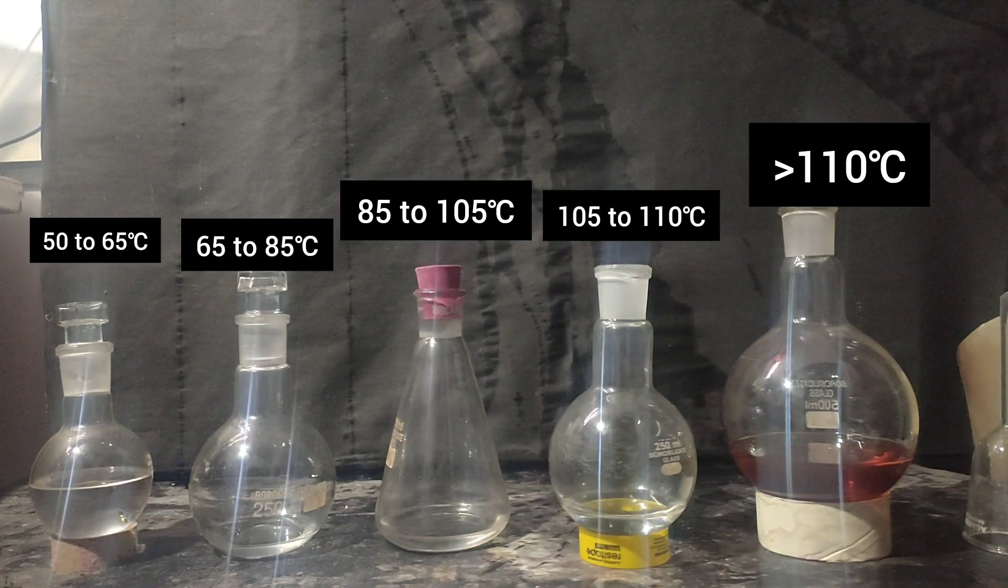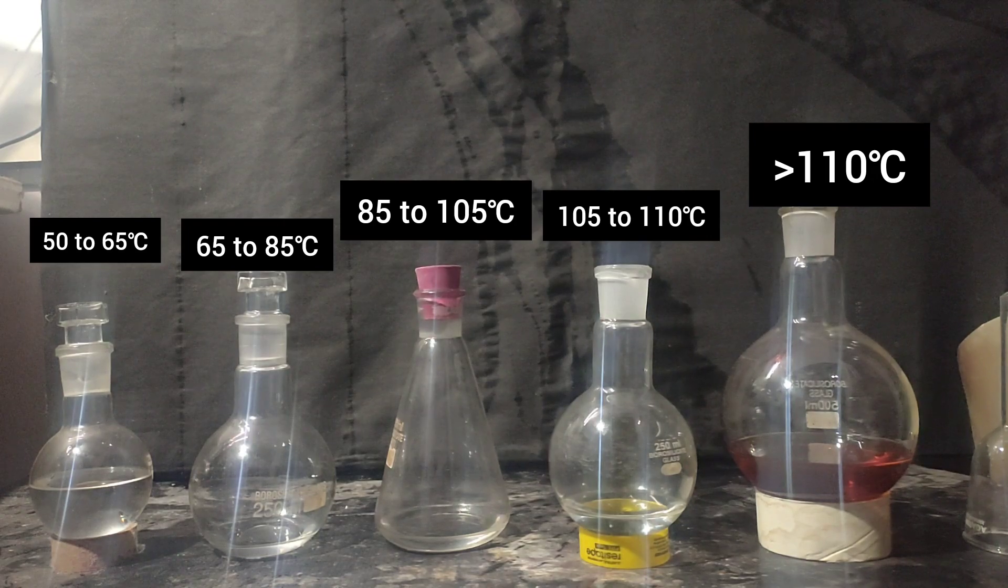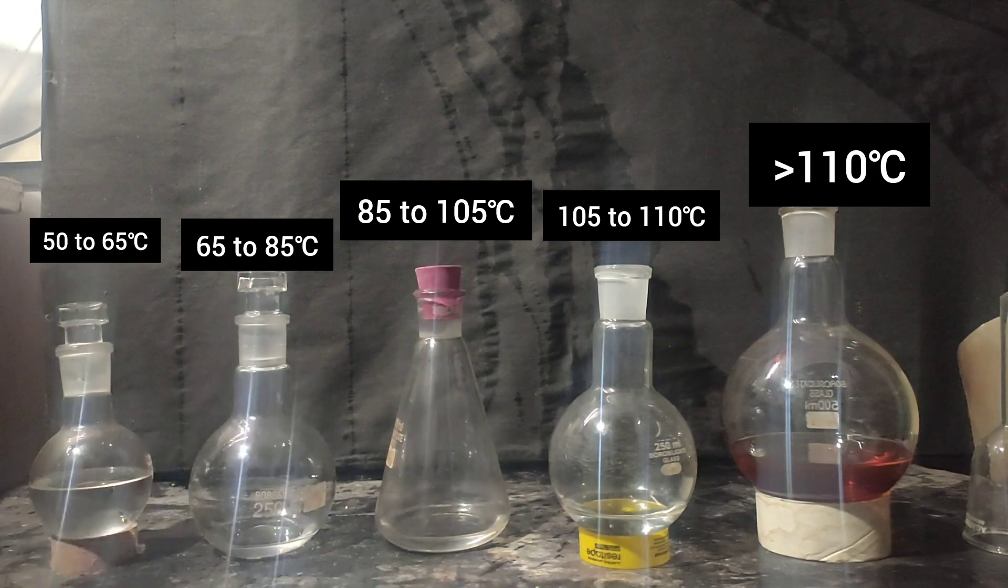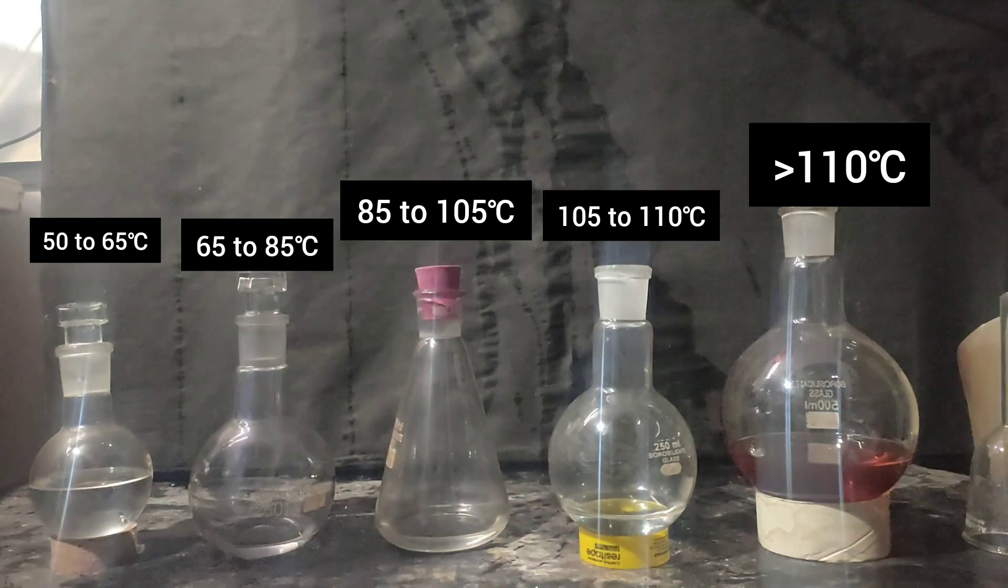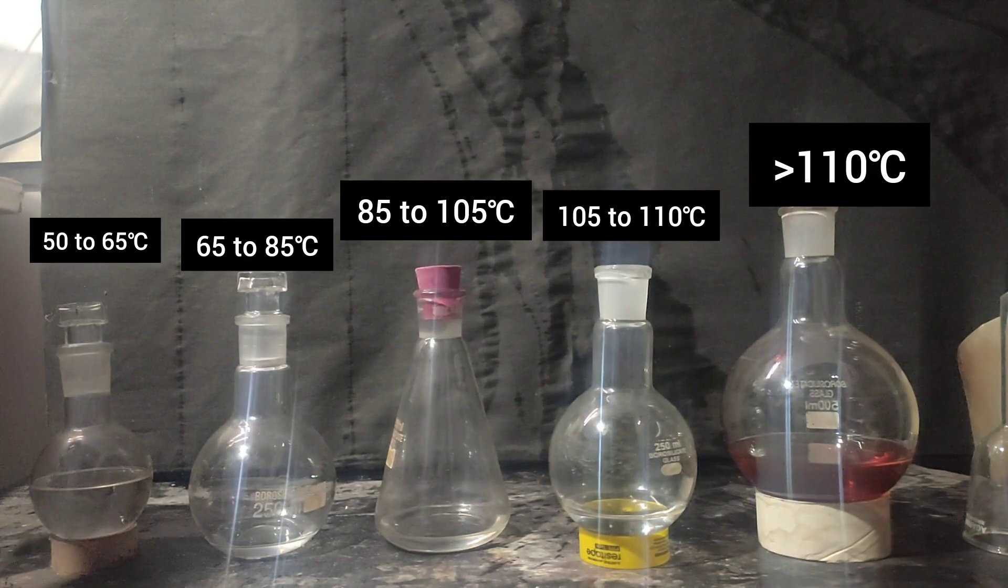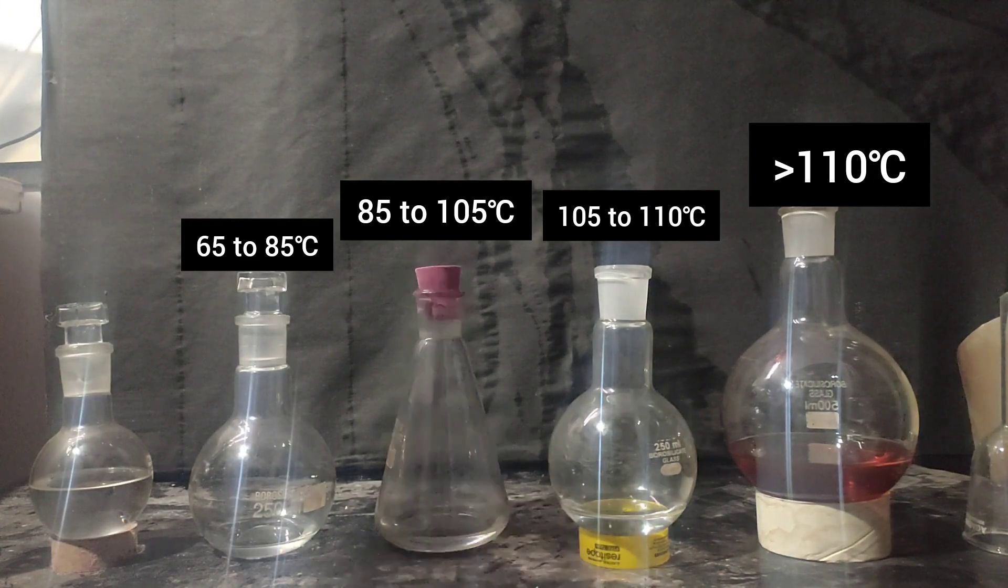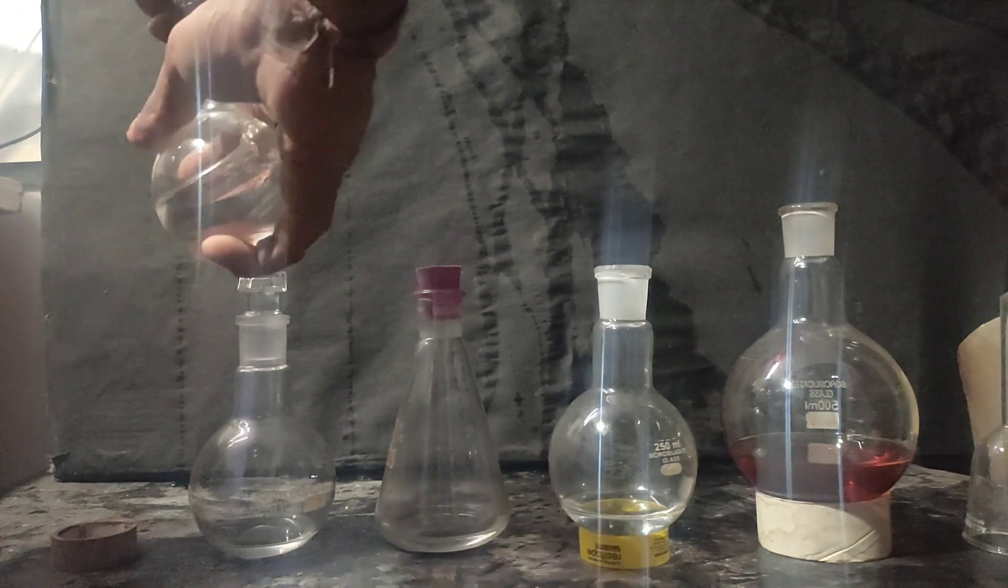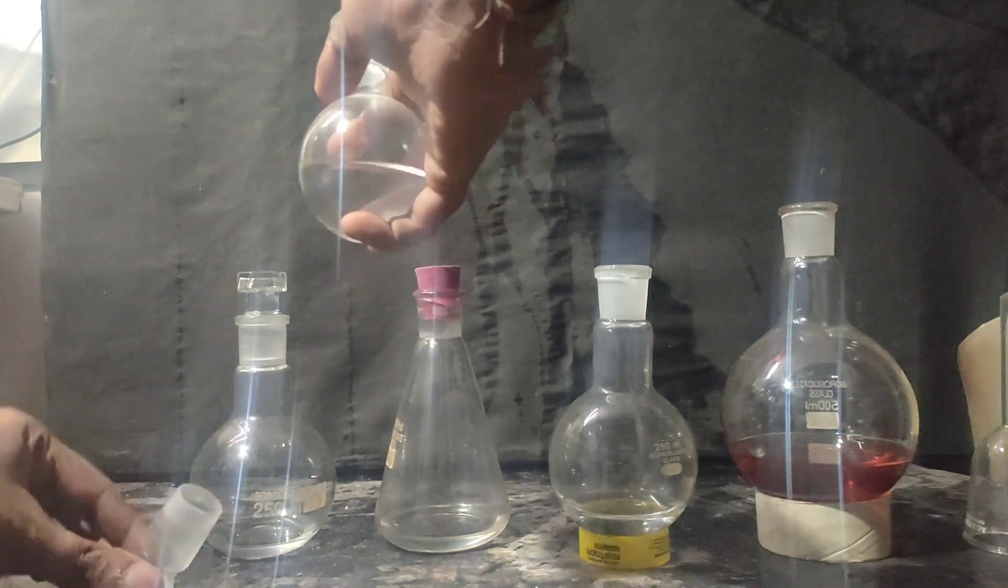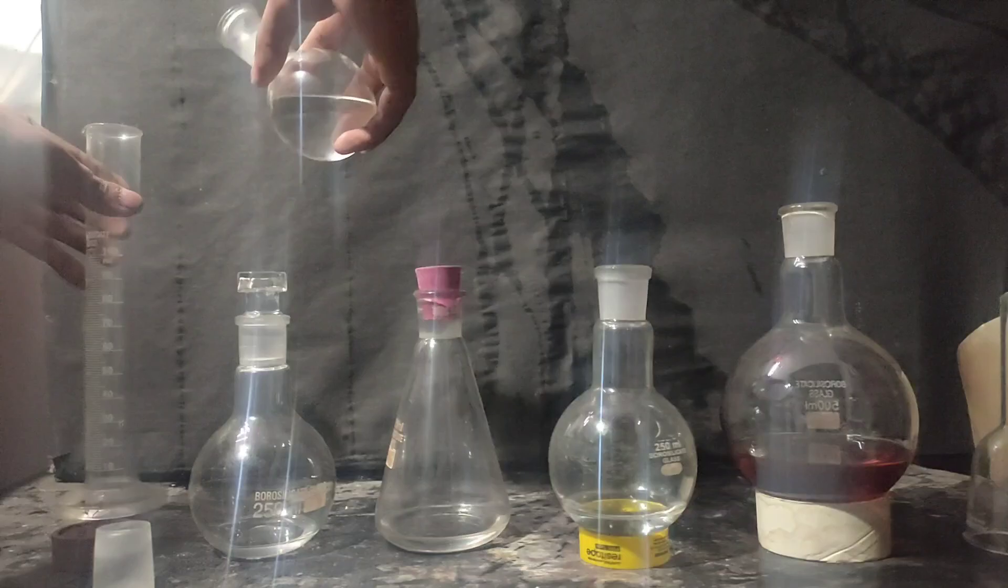These are the fractions that I have collected. On the right, we have the leftover gasoline. The fraction on the left came around between 50 to 65 degree celsius. This can be used as petroleum ether.